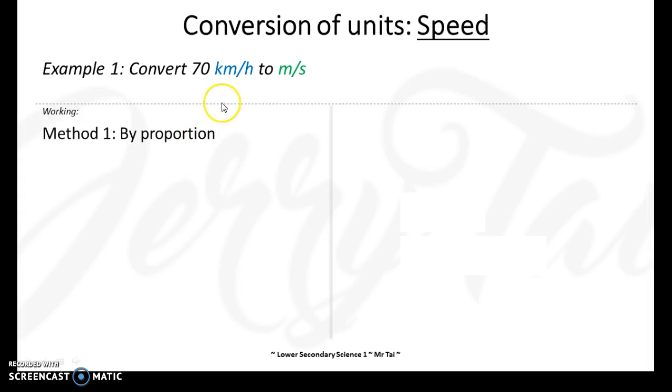Convert 70 kilometers per hour to meters per second. The first method is by proportion. We know that one hour gives us 70 kilometers. Based on the relationship in the box, one hour gives me 70,000 meters.